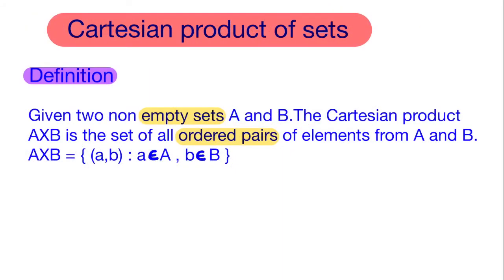Definition of Cartesian product of sets: Given two non-empty sets A and B, the Cartesian product A cross B is the set of all ordered pairs of elements from A and B. A cross B is equal to the set of all ordered pairs (a, b) such that a belongs to A and b belongs to B.